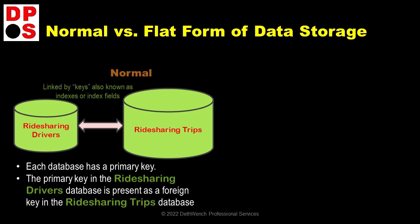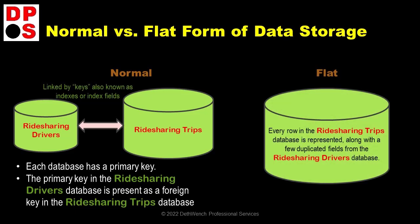How we link them is through a field called an index — another name for this field is a key. Each of these databases has a primary key, which is a unique value for each row. For Mariel in the ride-sharing driver's database, her primary key is 1234, because that's her ID. The ride-sharing trips database has its own primary key, which is unique for each row. But it also has a foreign key, meaning a field linking each row to the correct driver in the ride-sharing driver's database. So for all of Mariel's trips, there is a foreign key field that says it's for driver 1234. That's how the database is structured if it is normalized.